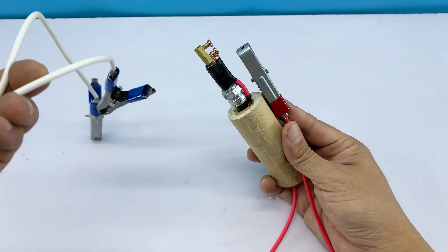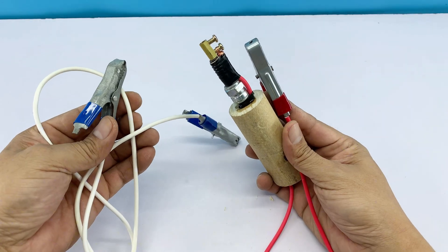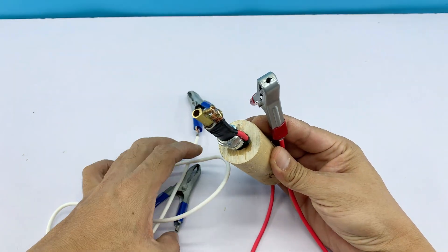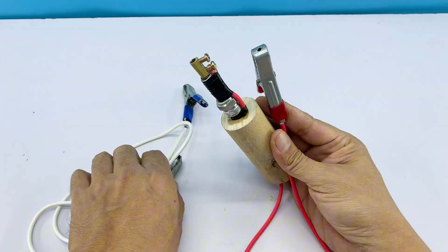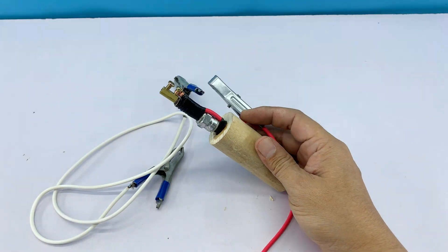With the positive side ready, the negative needs its own lead too. One wire, two crocodile clips, one on each end. Simple, tidy, and ready to work.